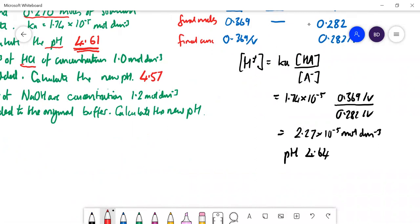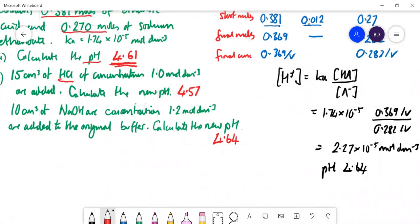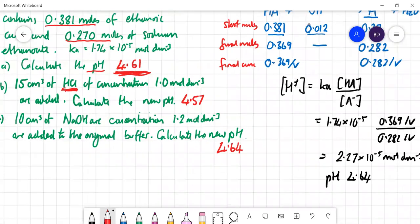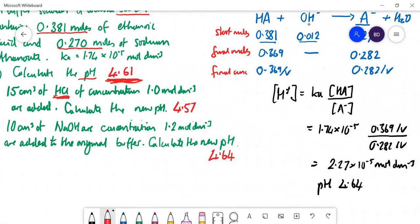4.64. Now quick common sense check. Here's the original pH 4.61. Add a bit of alkali to that. It's going to go up and it has gone up. So that's good. And it's gone up a little bit, not much because this is a buffer solution and it resists changes to pH. Incidentally, you can work out if you added that much HCl to 15 centimeters cubed of water instead of the buffer, the pH would go right down to really low. If you added the OH to that amount of water, the pH would shoot up. It would be really high. So it shows you that this does buffer the pH. It does stop the pH from changing.